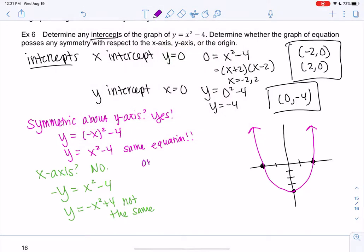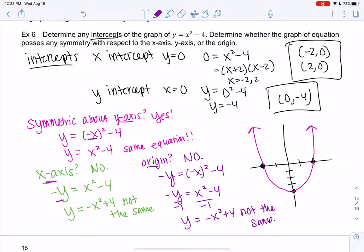And the final one is the origin, which tells us to replace both. So negative y equals negative x squared minus 4. So y-axis, we change x. X-axis, we change y. And then origin, we change both. So negative y is positive x squared minus 4, because any squared number turns positive. And again, we divide by that negative 1. If you didn't quite get it last time, we get negative x squared plus 4. And it's not the same. So this is also not symmetry.